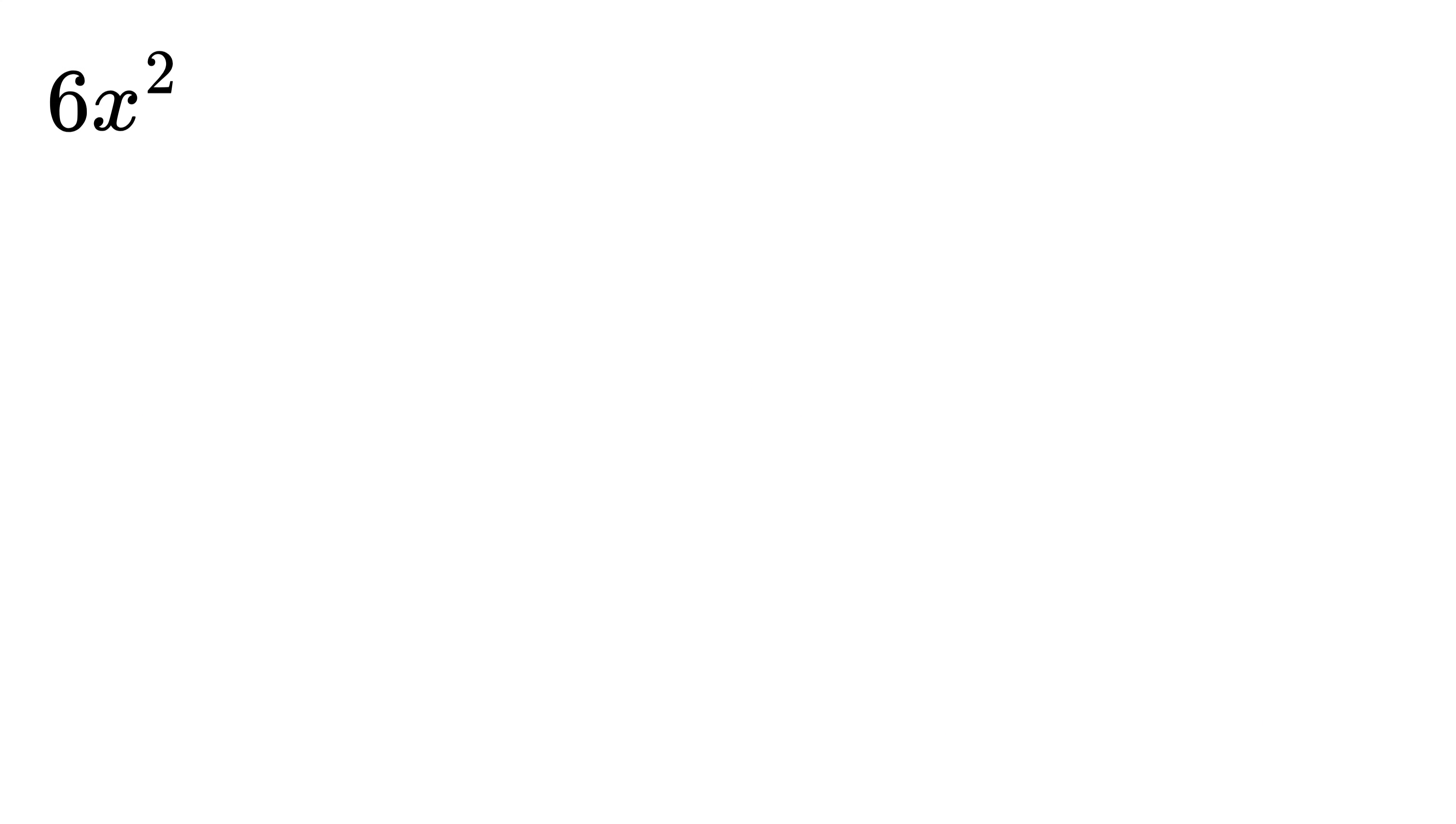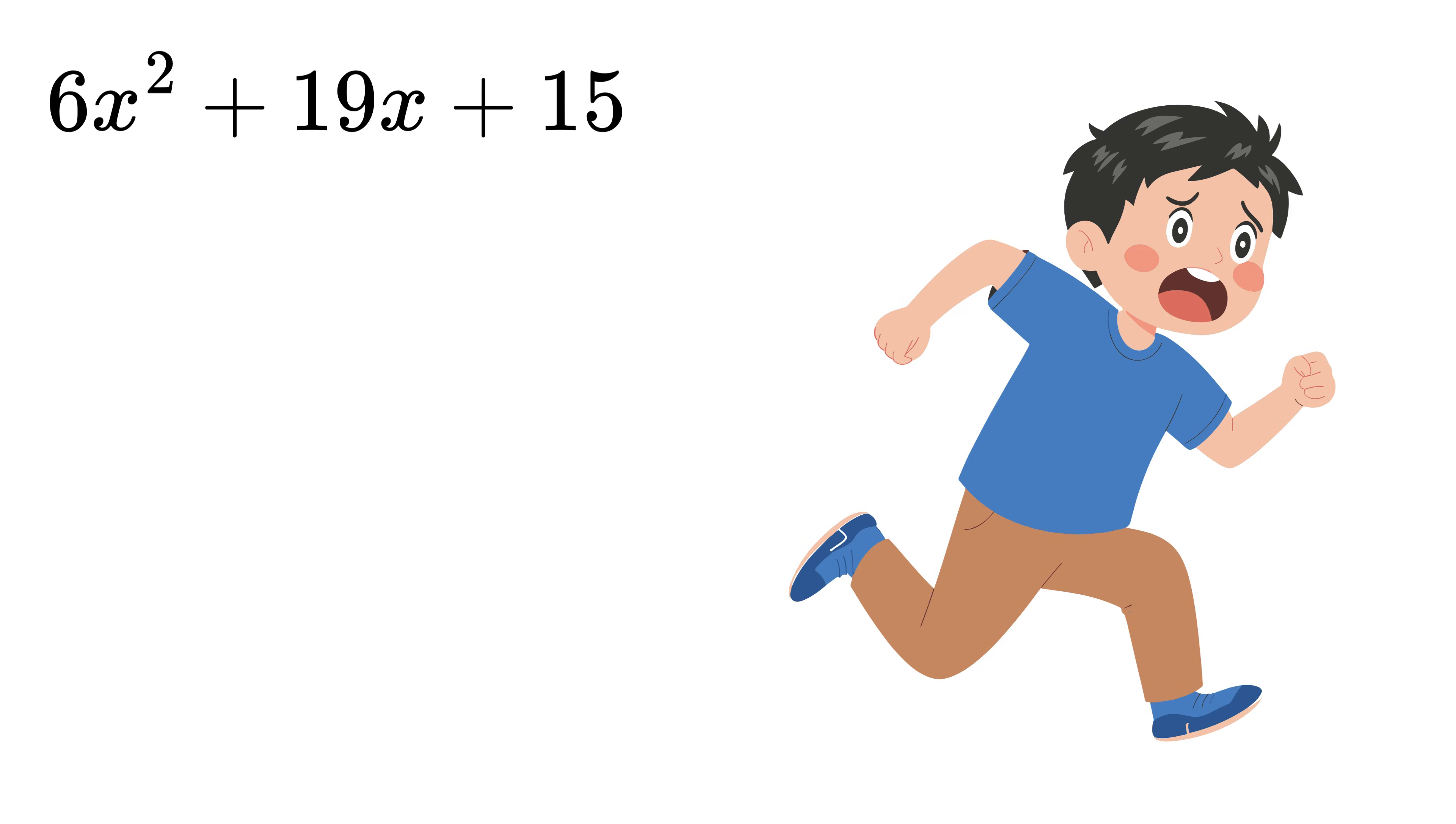First quadratic is 6x squared plus 19x plus 15. Don't be scared. Once you know the trick, factoring it will be a piece of cake for you.